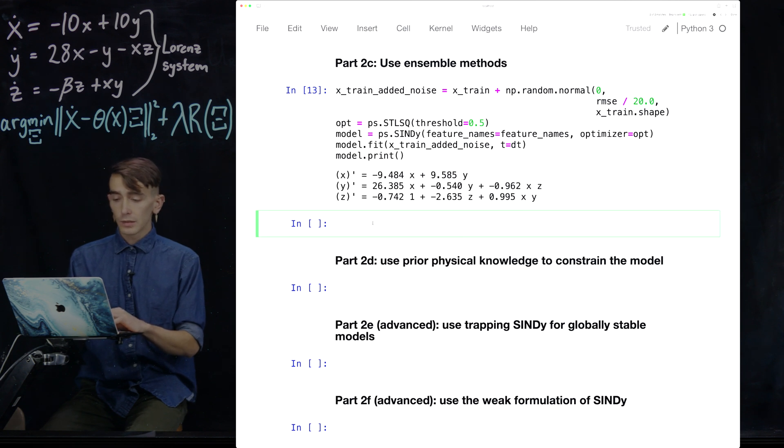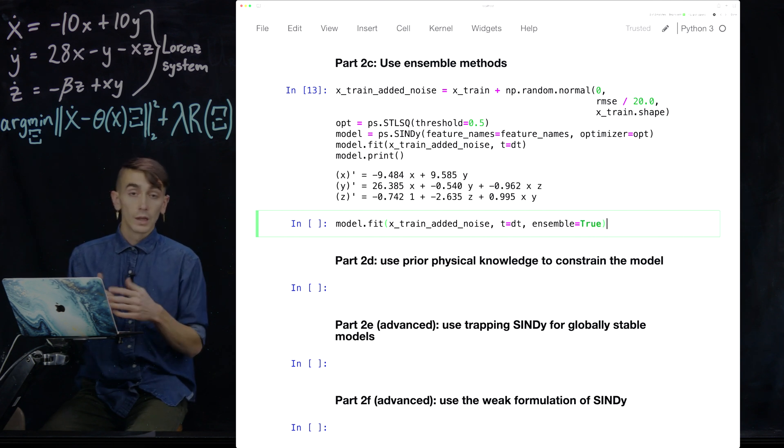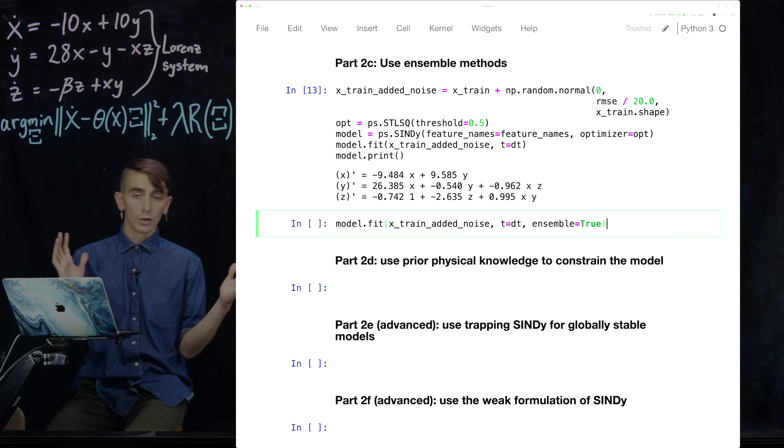So this is super easy in PyCindy. All you basically have to do is the exact same thing. You fit the data, and now you pass this ensemble equals true. And this is basically going to take your time series data and generate 20 different models where you subsample different parts of that time series data and generate a different model for each of those subsamples.